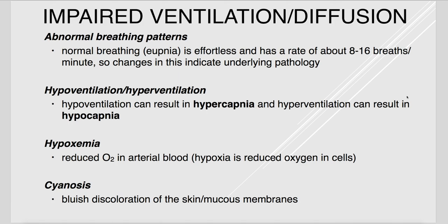Topics with impaired ventilation include abnormal breathing patterns. Normal breathing is known as eupnea, around 8 to 16 breaths per minute. Hypoventilation results in hypercapnia — too much CO2 in the blood — causing pH to drop. Hyperventilation results in hypocapnia — too little CO2. Hypoxemia is reduced oxygen in arterial blood, different from hypoxia, which is reduced oxygen in the cells. Cyanosis is that bluish color seen due to lack of oxygen.